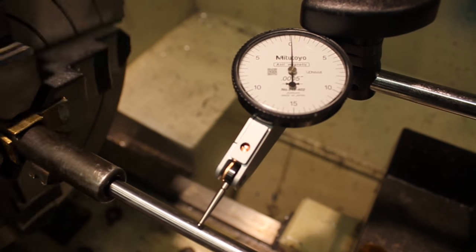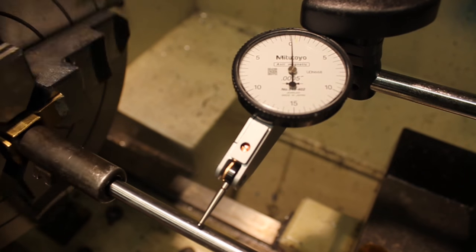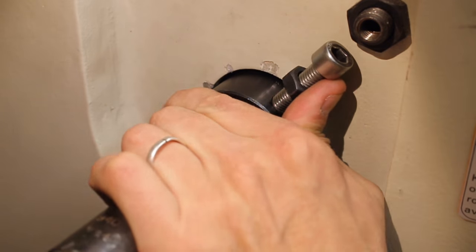The rod is then placed into the tail stock of the lathe. The tail stock is precisely zeroed into the lathe's center axis, and by placing the range rod into the tail stock, a precise measurement can be achieved.